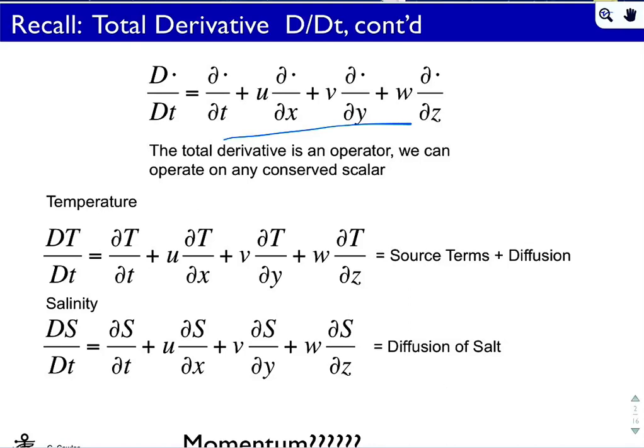Miles gave a very nice analogy looking at an estuary and how gradients in salinity, coupled with advection, can change locally the value of the salinity. We're looking at local rates of change and the influence of advection on these scalar quantities — temperature and salinity, for example.